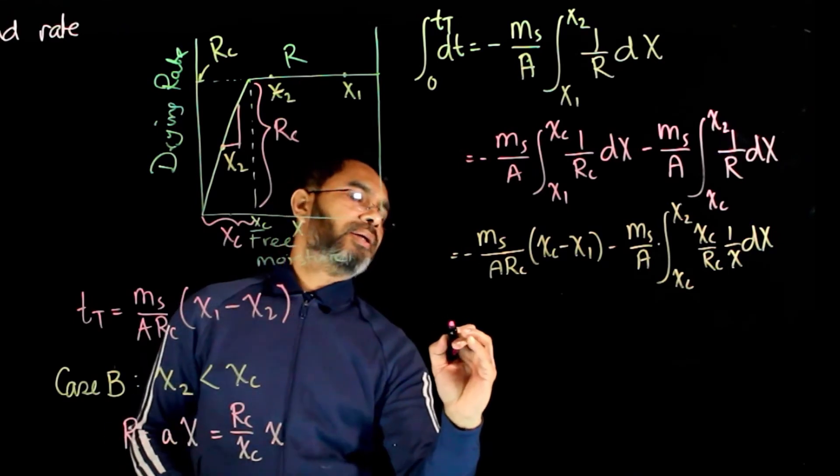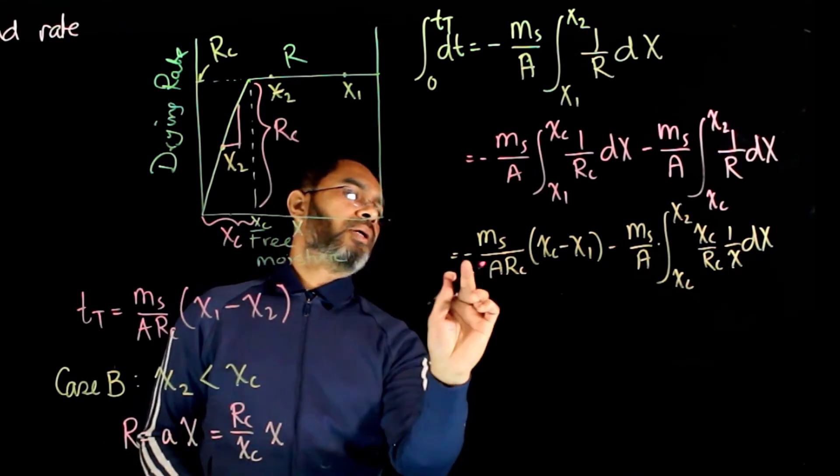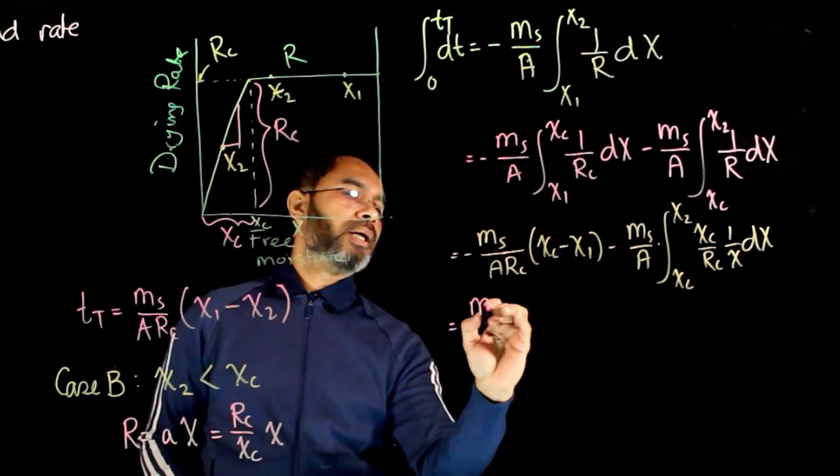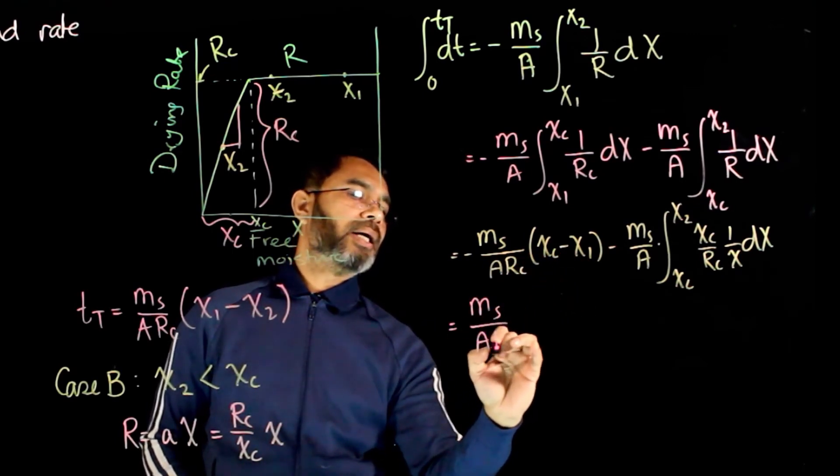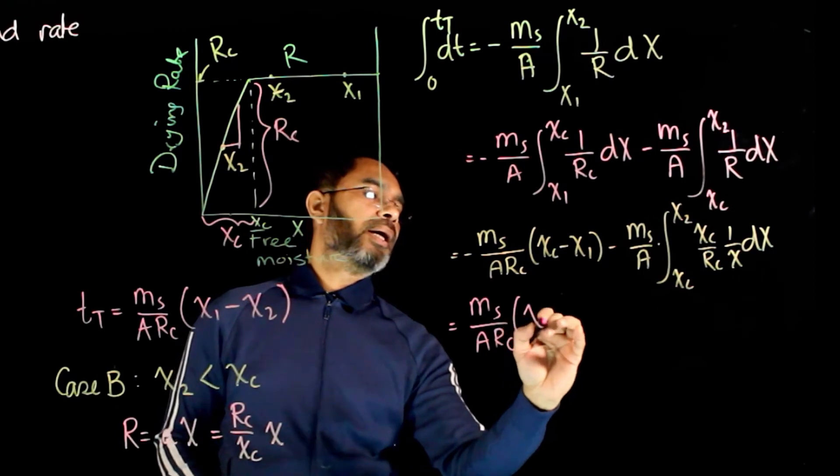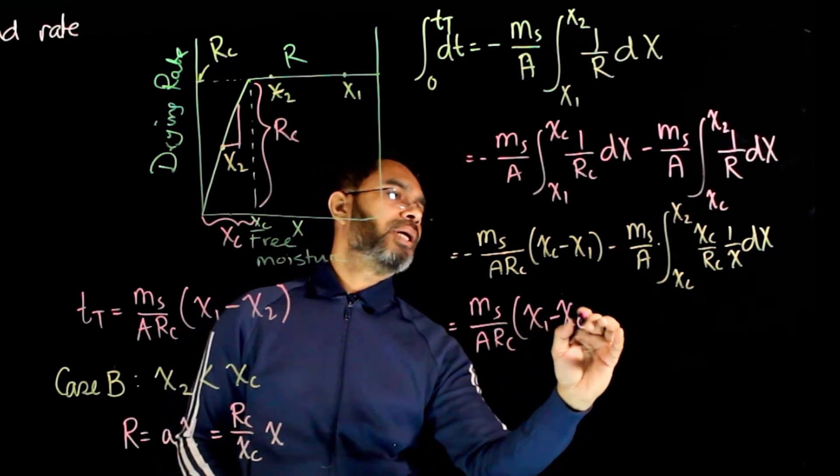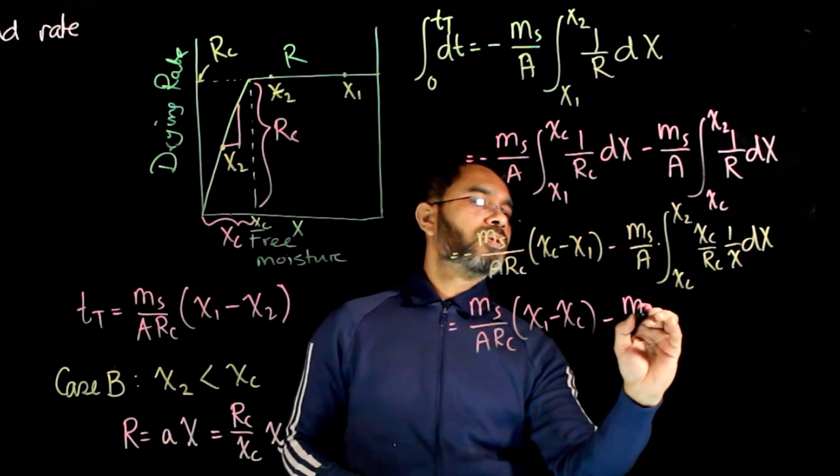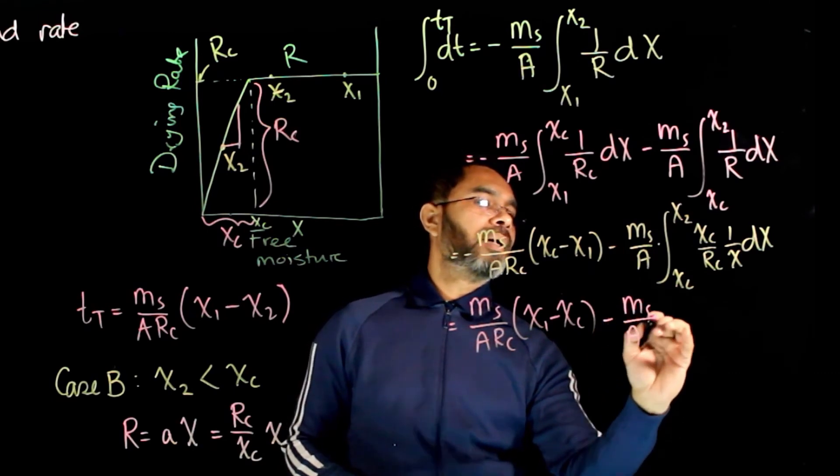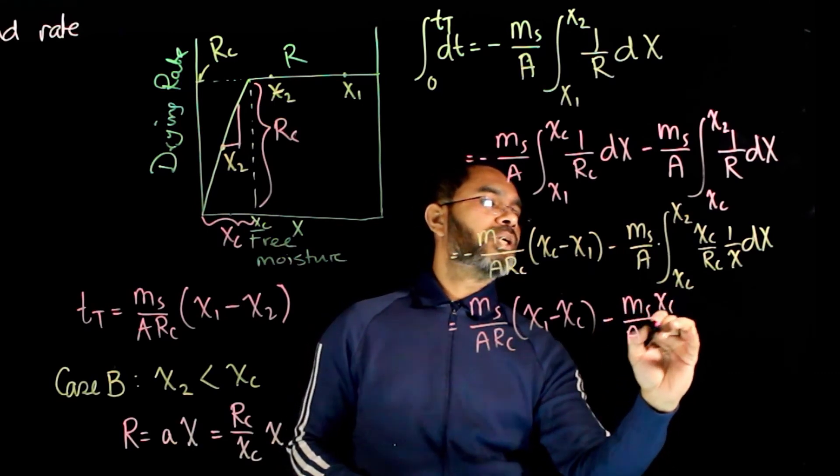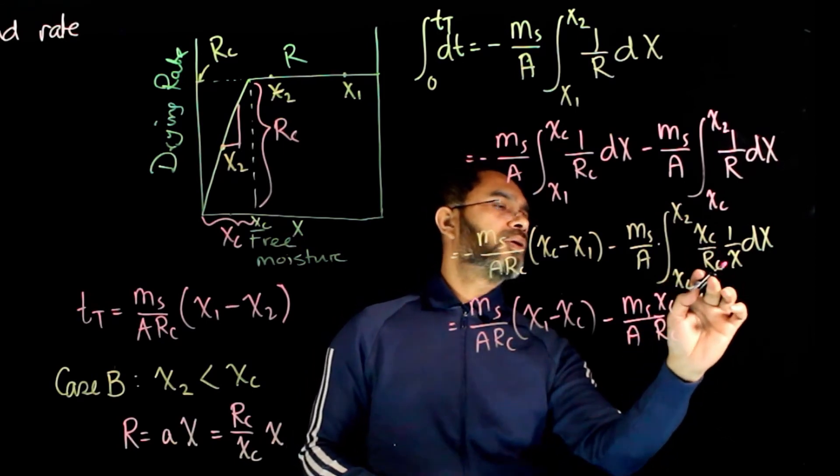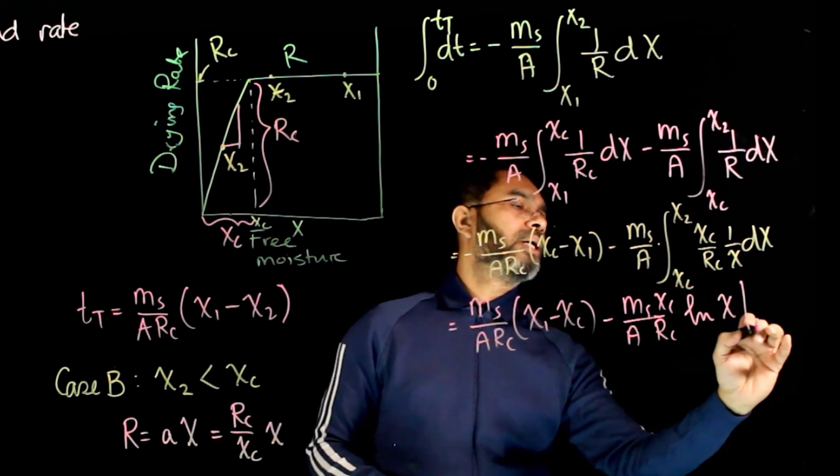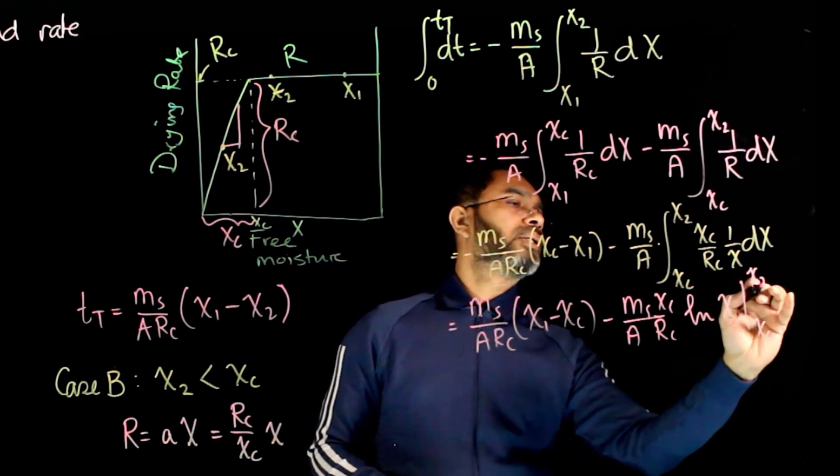So this gives us here, this negative and this, if you just switch the values here, ms over a rc, x1 minus xc, and you have this, ms over a, xc over rc, both being constant, 1 over x would be, ln x limit, xc to x2.